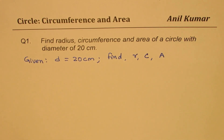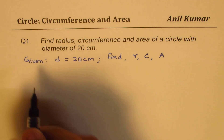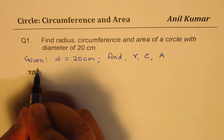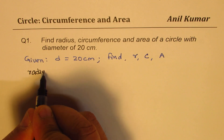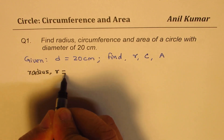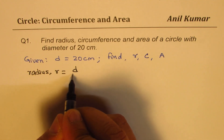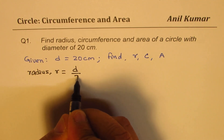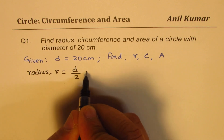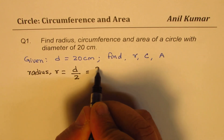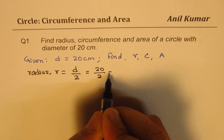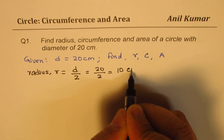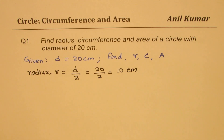Let's do them one by one, beginning with radius. Radius r is half of the diameter — diameter divided by 2. So, 20 divided by 2 will give us 10. The units are centimeters, so the radius is 10 centimeters.